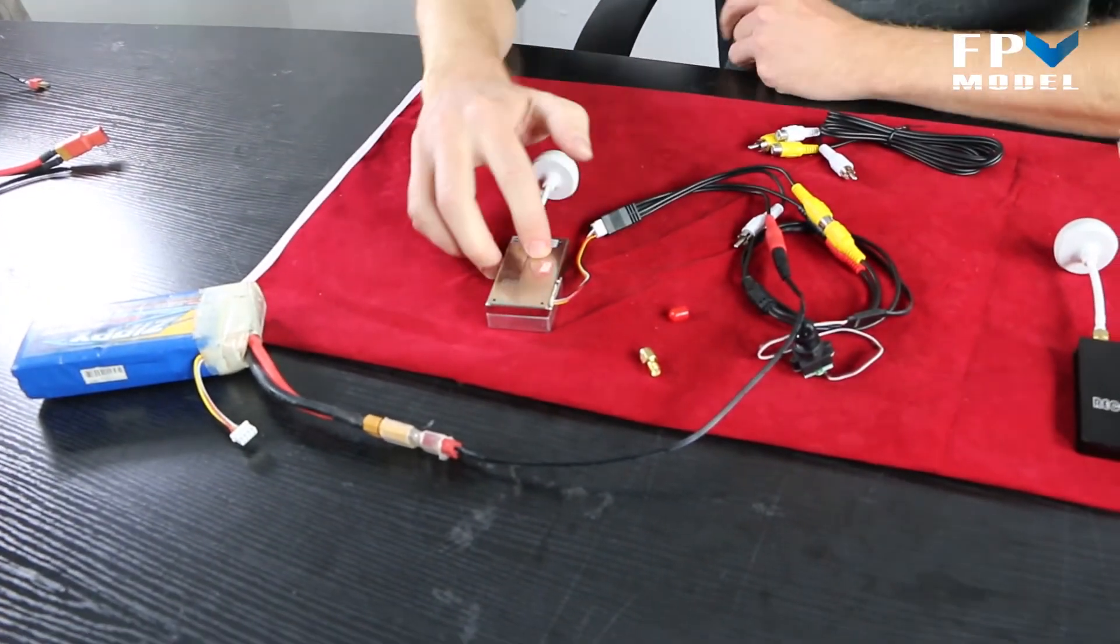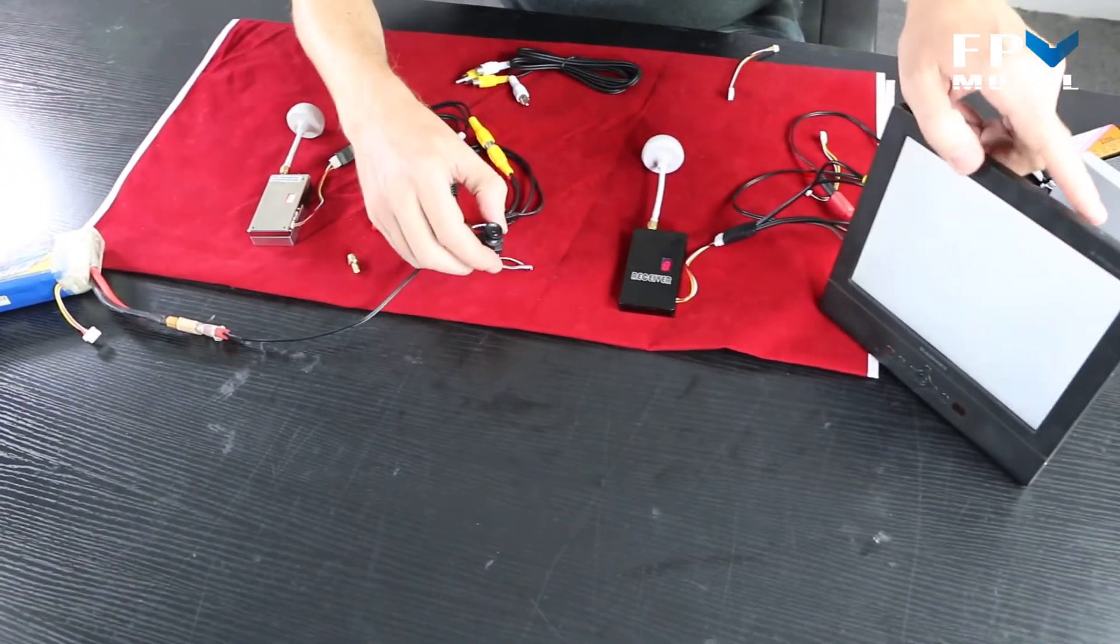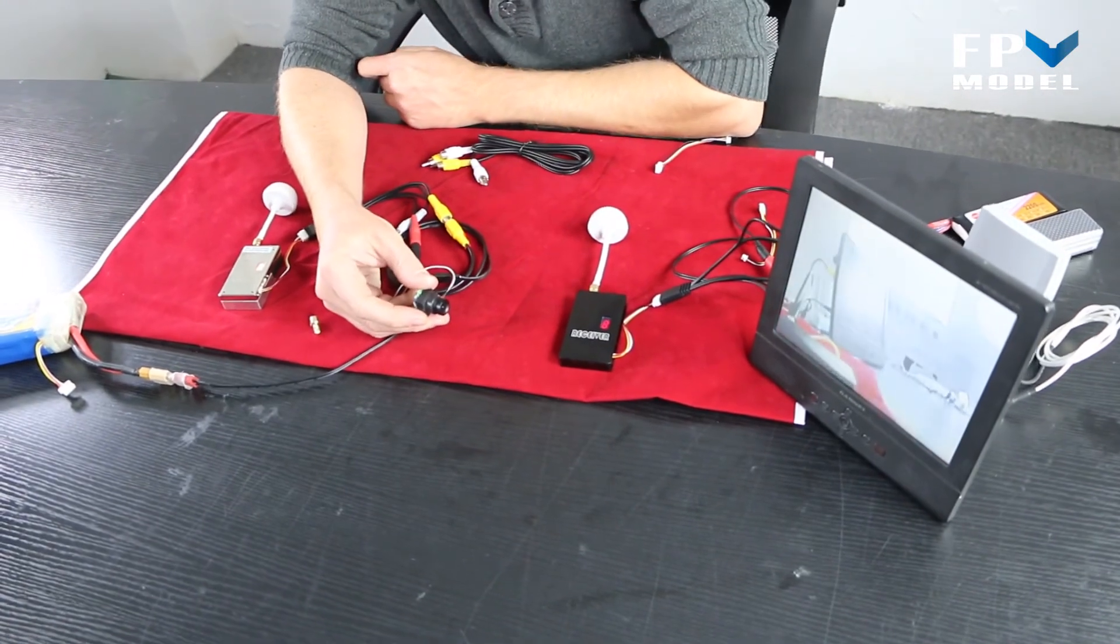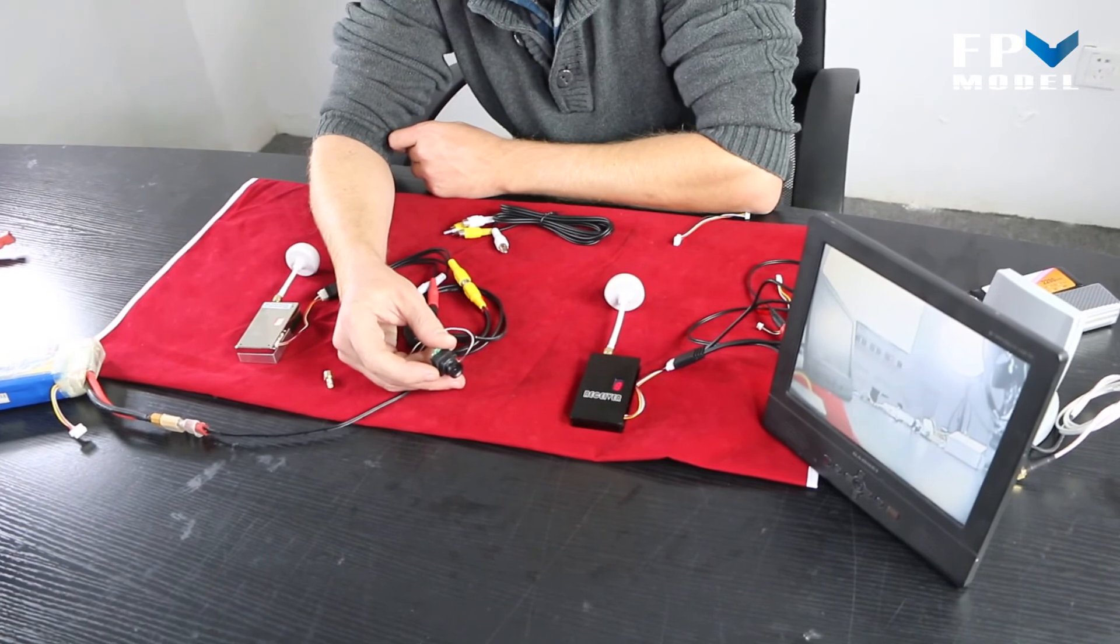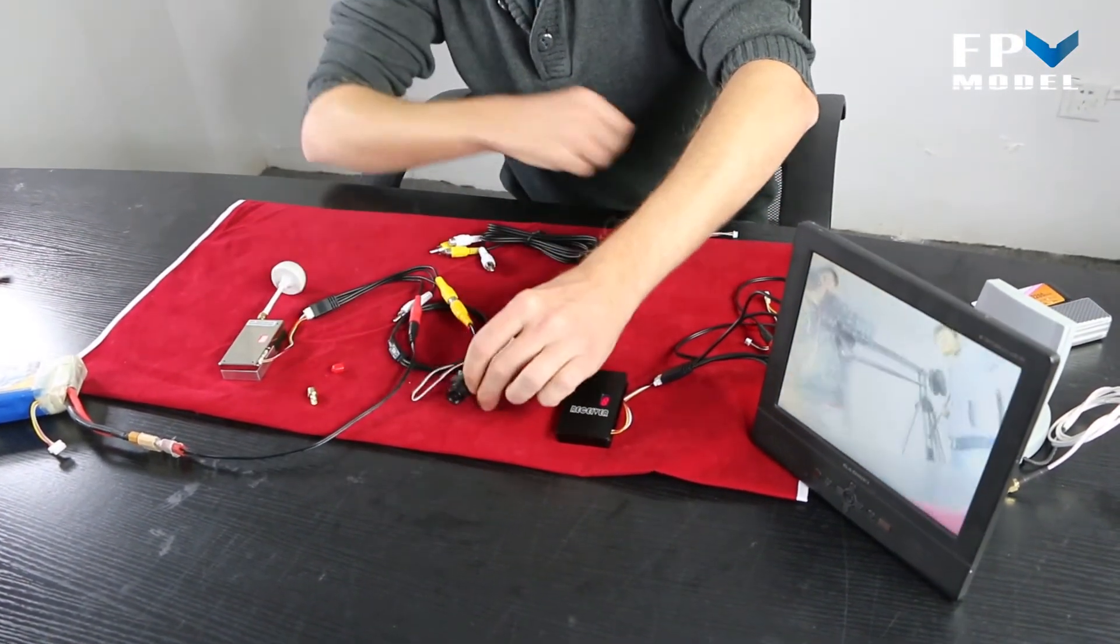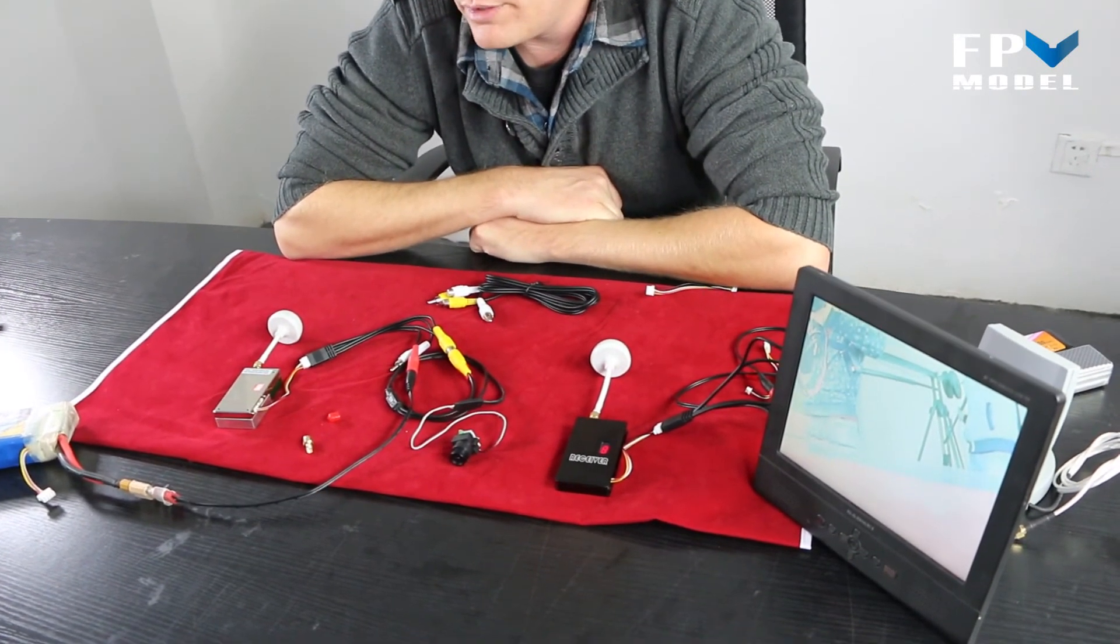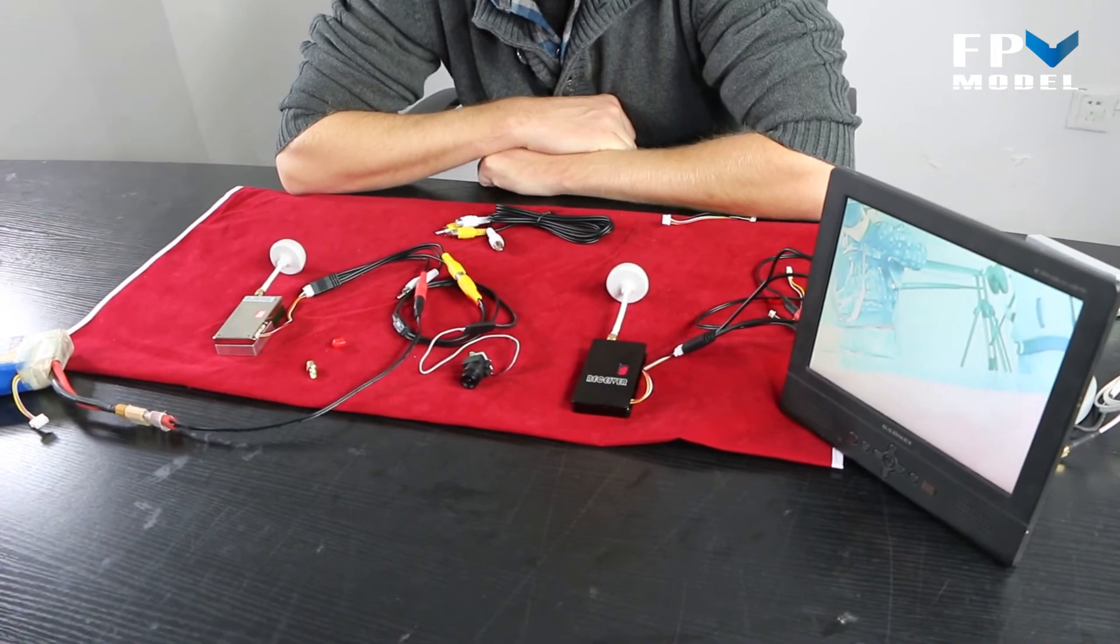So, the video transmitter is on 8, the video receiver is on 8, and we have our camera here. So, that is how you use the transmitter and the receiver, and get everything connected. As long as you follow the simple guideline on connecting everything, you shouldn't have any problems with it.